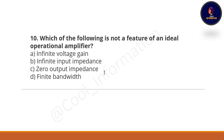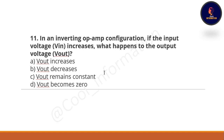Tenth question: Which of the following is NOT a feature of an ideal operational amplifier? Option A: infinite voltage gain. Option B: infinite input impedance. Option C: zero output impedance. Option D: finite bandwidth. The correct option is finite bandwidth.